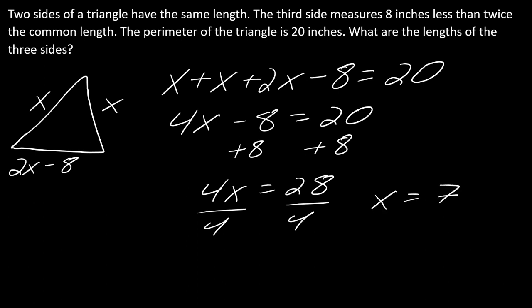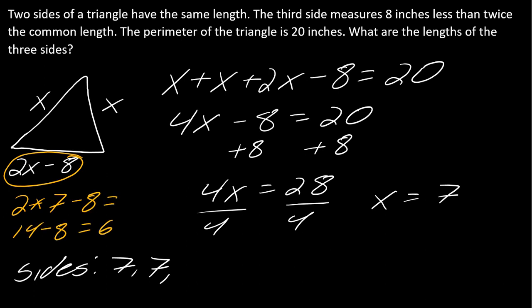So am I done? No, I need to know the length of the sides. So the sides are going to be 7, 7, and then using this 2x minus 8, if I take 2 times 7 minus 8, that's 14 minus 8, so that equals 6. The last side is 6.